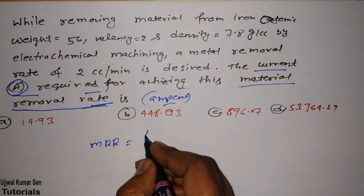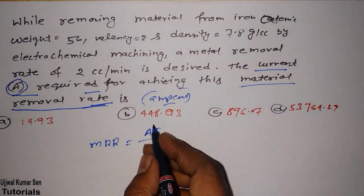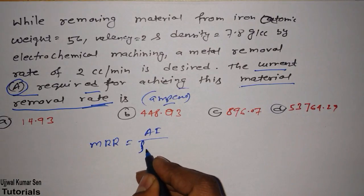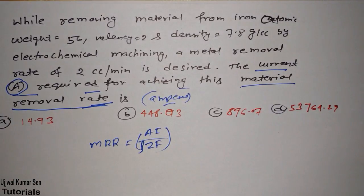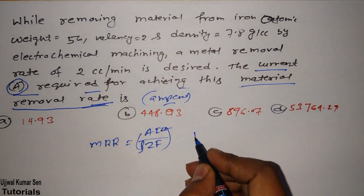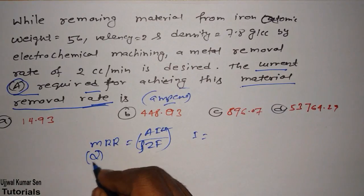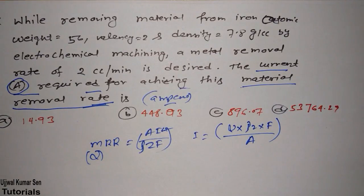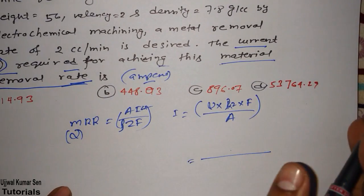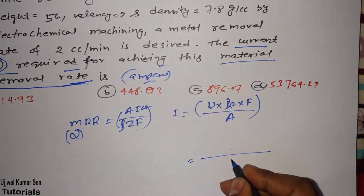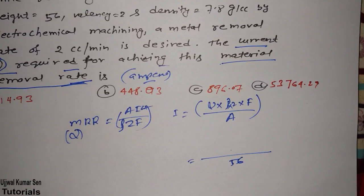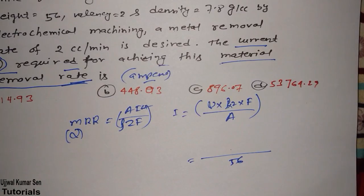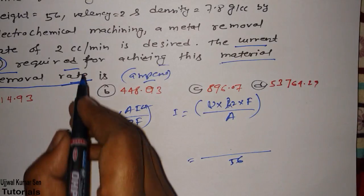The MRR formula is Q = AI divided by ρZF, where A is atomic weight and I is current. Rearranging to solve for current: I = Q × ρ × Z × F divided by A. Now we substitute the given values — the atomic weight A is 56.